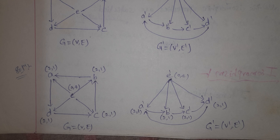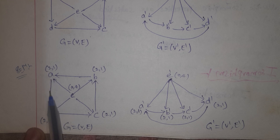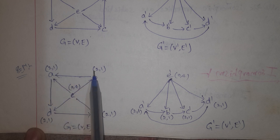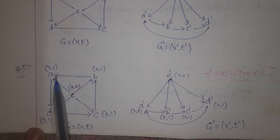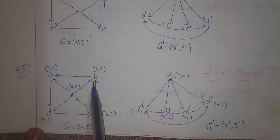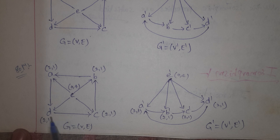Now see the degree table. For vertex A: 2 inputs, 1 output — degree 2, 1. For vertex B: 2 inputs, 1 output — degree 2, 1. For vertex C: 2 inputs, 1 output — degree 2, 1. For vertex D: 2 inputs, 1 output — degree 2, 1.